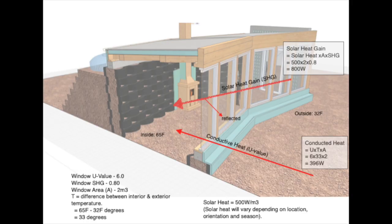Some passive systems use a small amount of conventional energy to control dampers, shutters, night insulation, and other devices that enhance solar energy collection, storage, and use, and reduce undesirable heat transfer. This should be avoided, as a design that only utilizes the natural physics of the planet and the existing characteristics of the local job site is infinitely more reliable and will never break down, ever.